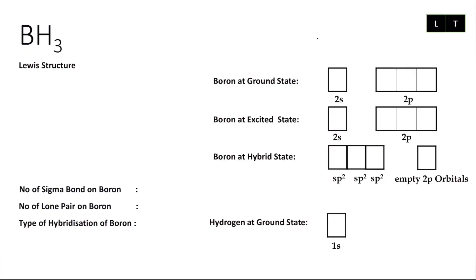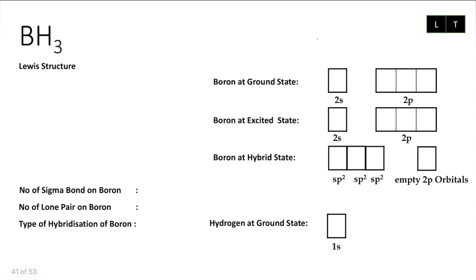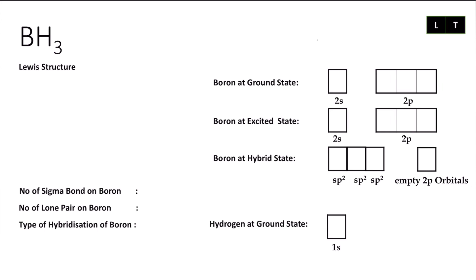Assalamualaikum, hi guys. In this video I'm going to continue from the previous one — we are going to describe the hybridization process. We will continue from BH₃. Draw the Lewis structure first, and then I have sigma bonds — three of them — so I'm going to put number of sigma bonds: three. There is no lone pair on boron.